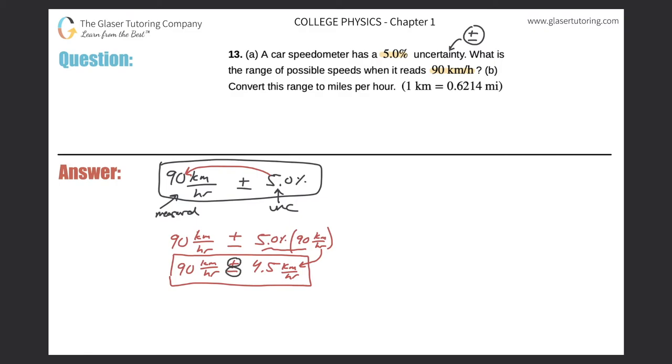Okay, both the plus and the minus. So now what I'm going to do is I'm going to write 90 kilometers per hour plus 4.5 kilometers per hour. And since the units are the same, I can simply add it, right? So the upper limit of the uncertainty will be 94.5 kilometers per hour.